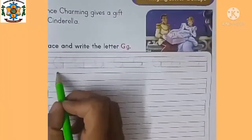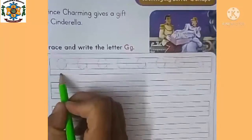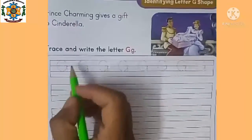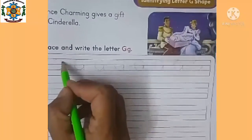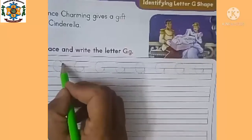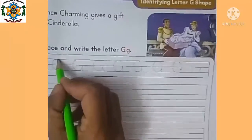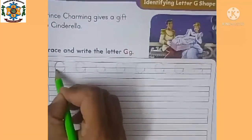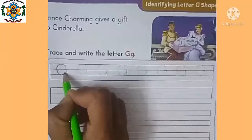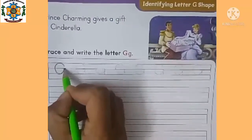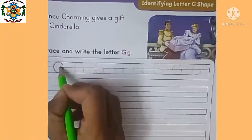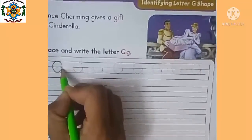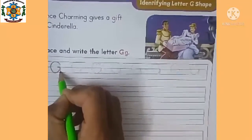Now we will write capital letter G. We will take a curve from here. Go down, touch the line. Again go to blue line, sleeping line, standing line.